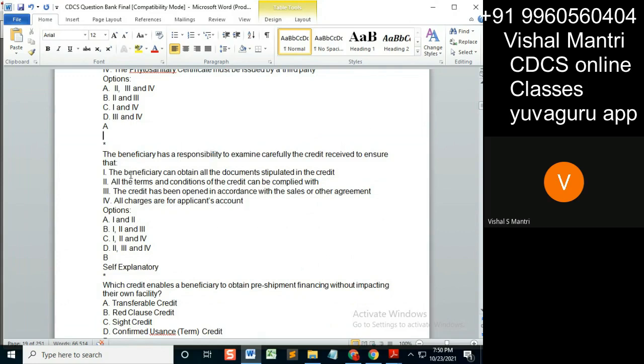What does the beneficiary need to check? Let's see. The beneficiary can obtain all documents stipulated in the credit. He has to definitely check whether he can get all the documents which are required in the credit, and that all the terms and conditions of the credit can be complied with.